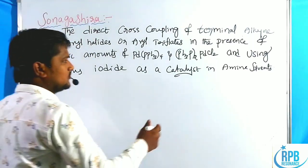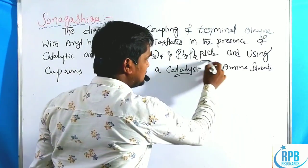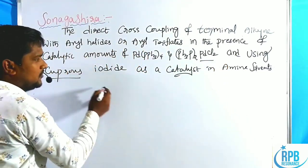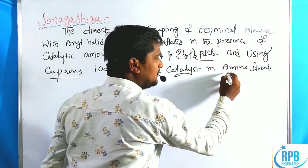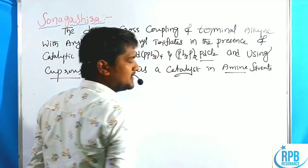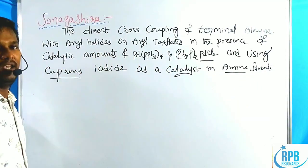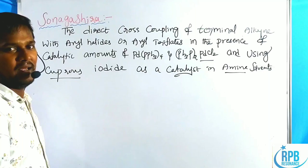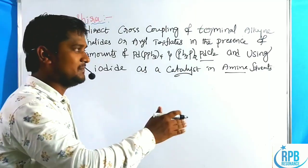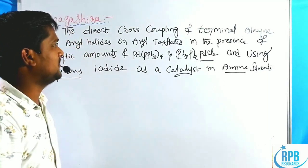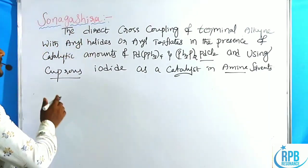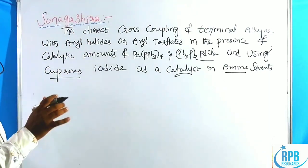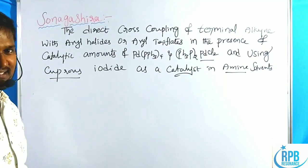So two catalysts are used: palladium as well as copper. Palladium and copper are used along with amine solvents such as butylamine or propylamine. This is the overall reaction regarding the Sonogashira coupling.